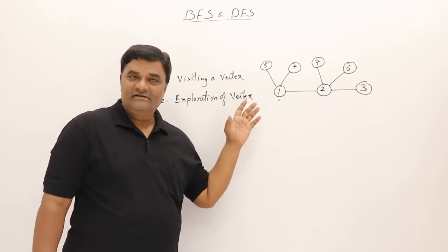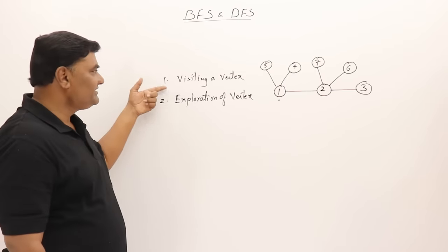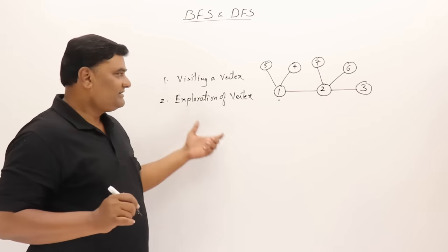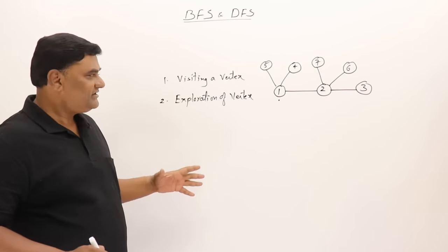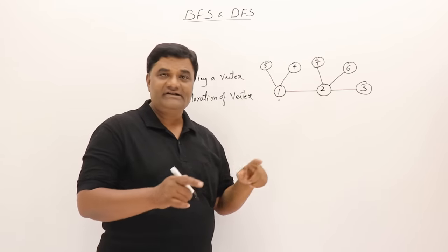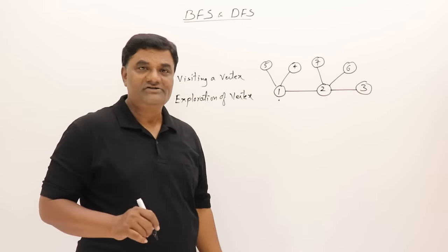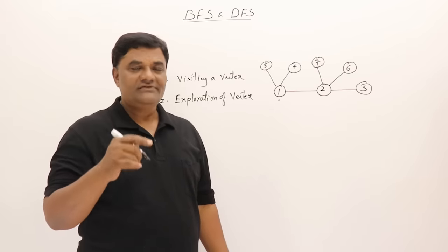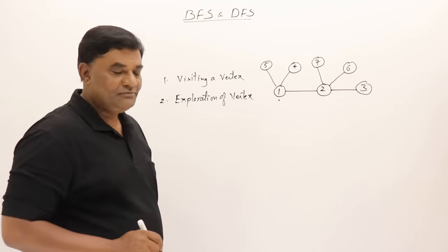For understanding these traversals we should know two terms. First is visiting a vertex, which means going to a particular vertex. Second is exploration of a vertex — if I am on some particular vertex, then visiting all its adjacent vertices is called exploration. Based on these two terms we can understand traversals.